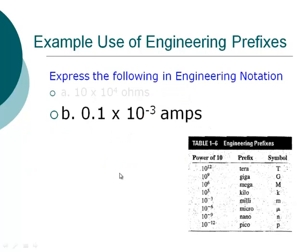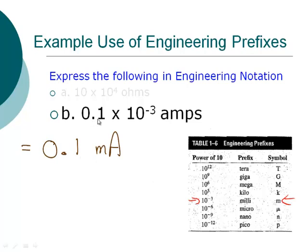Let's look at another example. In this case, the exponent is already a multiple of 3 — we have 10 to the minus 3 — so I can make a direct conversion. I'm going to leave that as 0.1, and then replace times 10 to the negative 3 with milli, and put in the sign for amps.